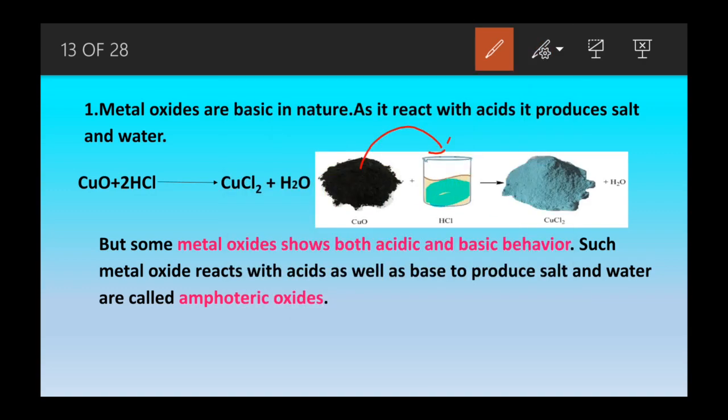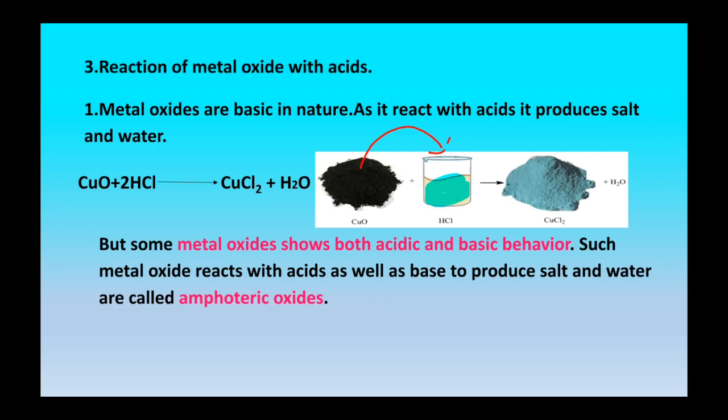When copper oxide is added to HCl the colour of the solution changes to blue, indicating the formation of CuCl₂. So whenever copper oxide reacts with HCl it produces CuCl₂ plus water — CuCl₂ is a salt.